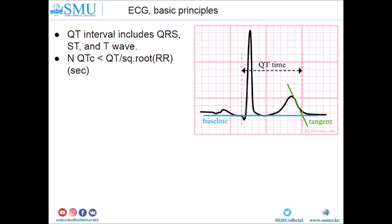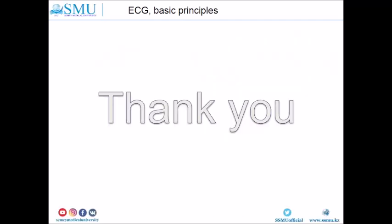The last point to measure during ECG interpretation is the QT interval. The QT interval includes the QRS complex and ST segment, beginning from the Q-wave and ending with the T-wave. Normally, the corrected QT (QTc) should be less than the QT interval divided by the square root of the RR interval. Thank you very much for your attention.